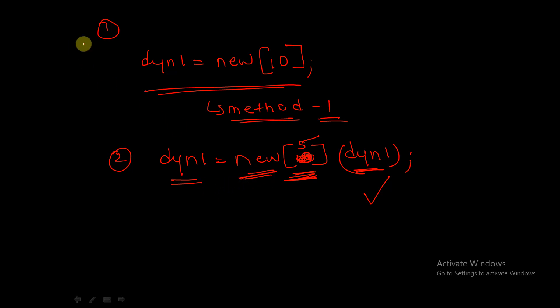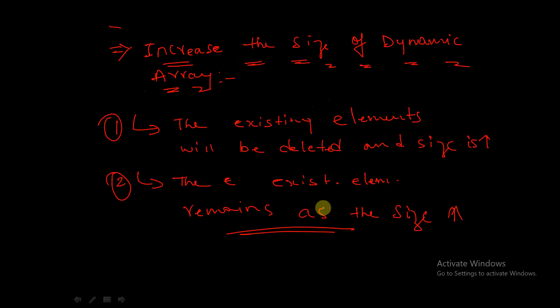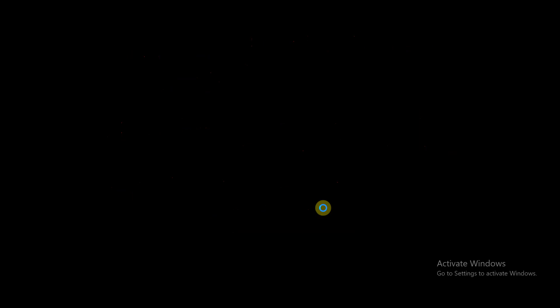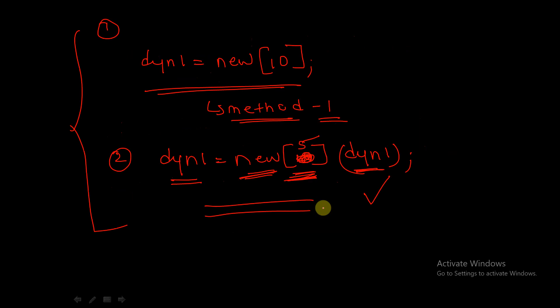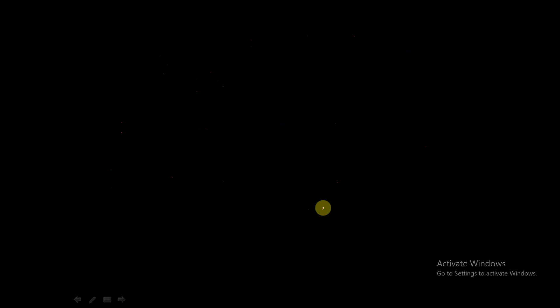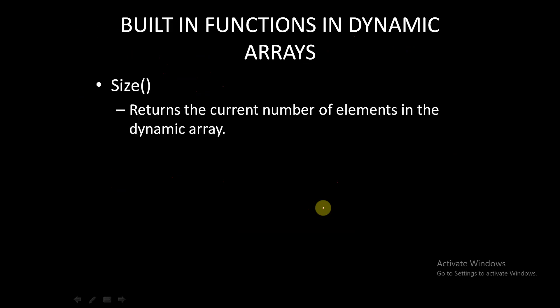These are the two methods for increasing the size of dynamic arrays. In the first method, existing elements are deleted and the size increases. In the second method, existing elements remain and the size also increases. Now let's see some built-in functions available for dynamic arrays.